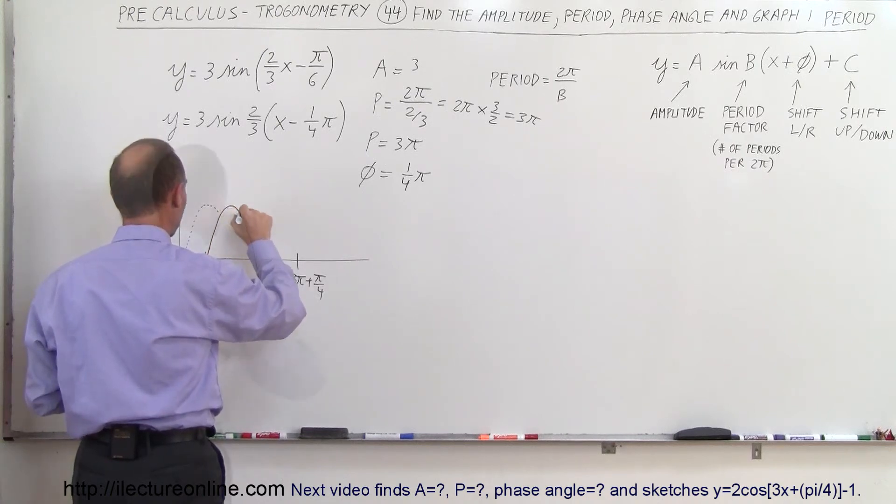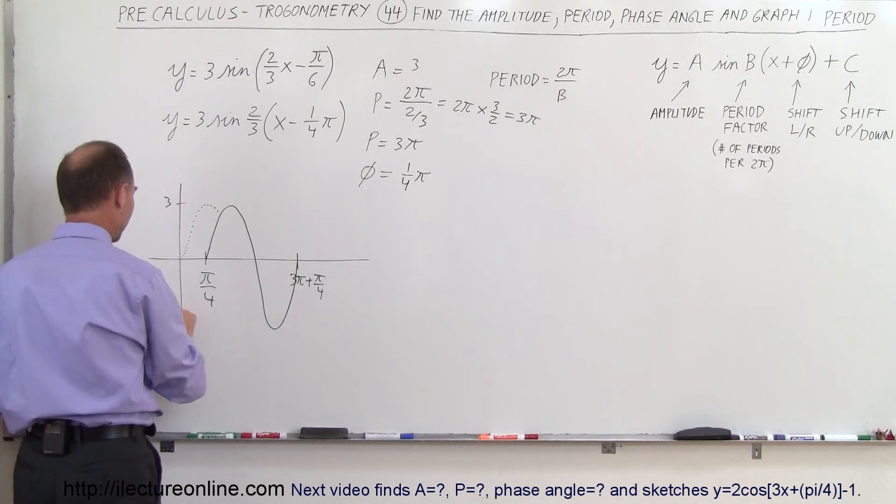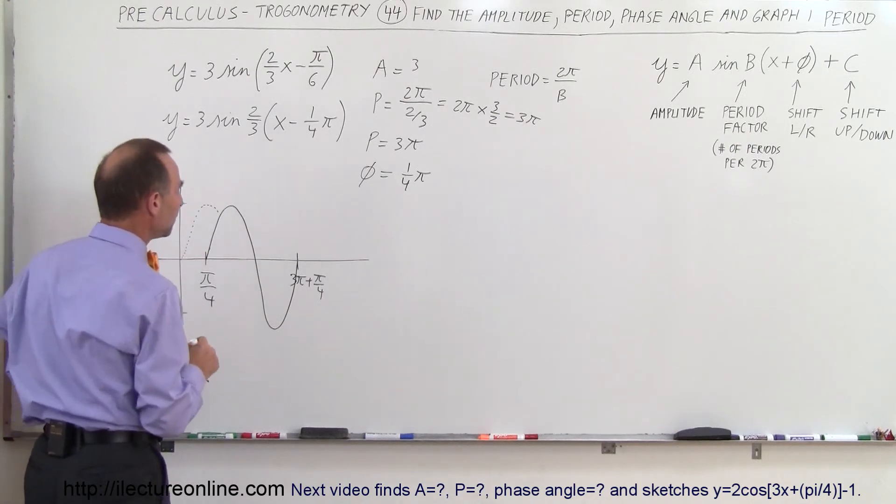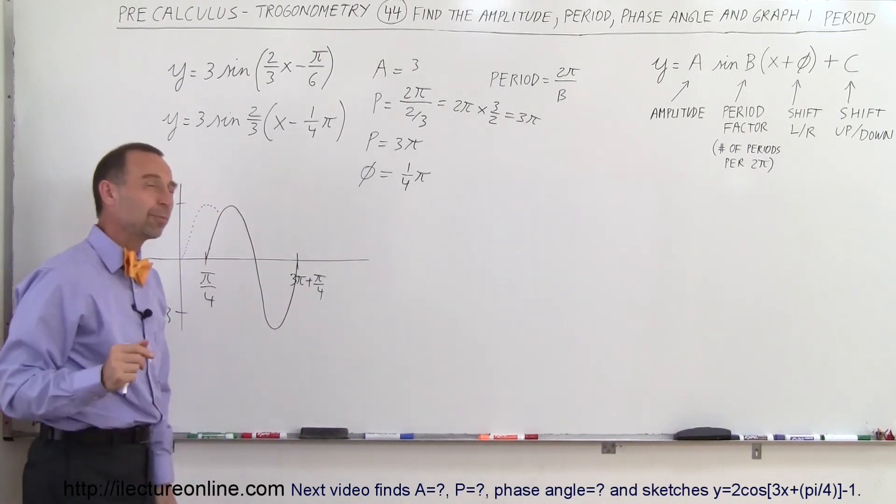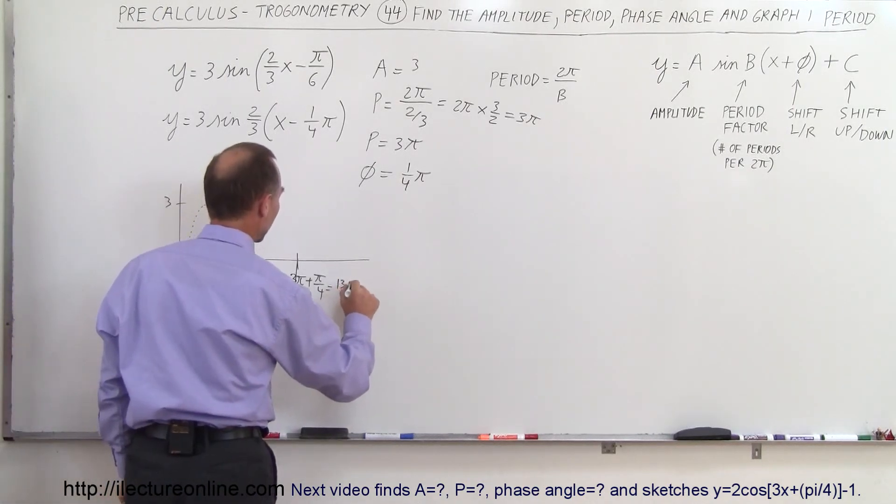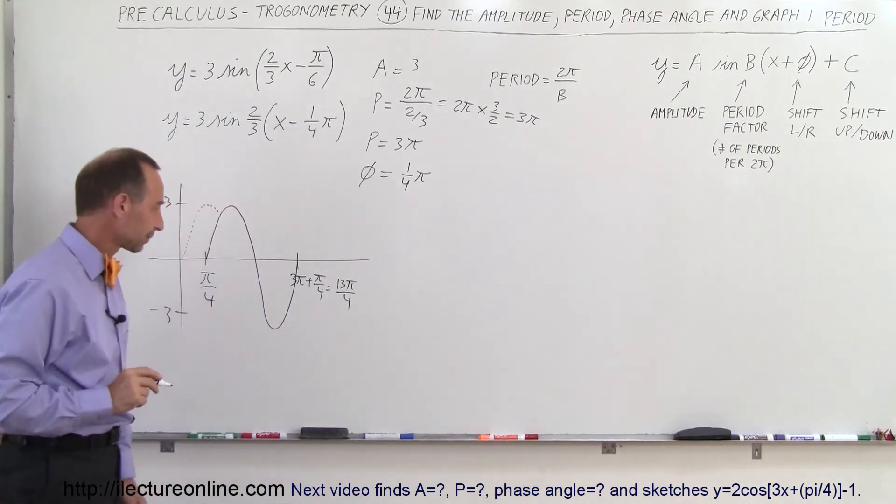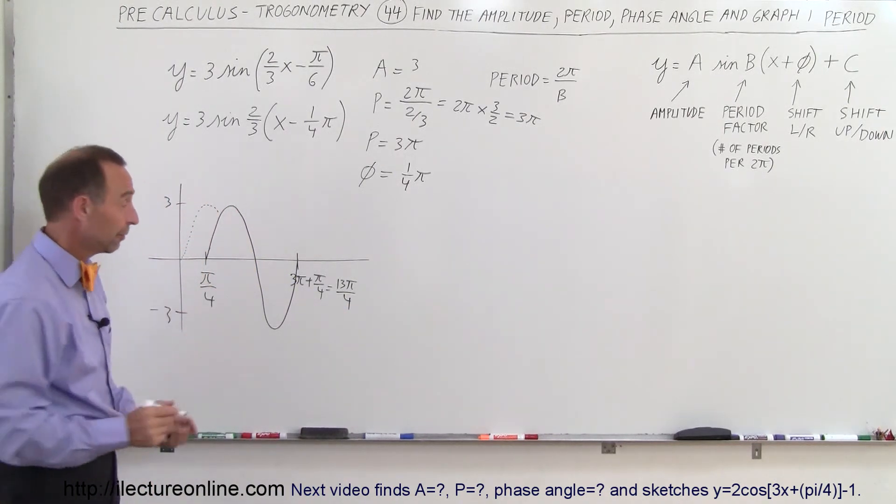So let's go ahead and graph that. And we'll go from plus three to minus three. That will be the amplitude, plus three, minus three. And of course, what is 3π plus π over four? That will be 13π over four. Yep, that's correct. And so that will be what the function looks like.